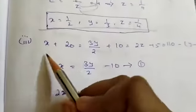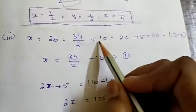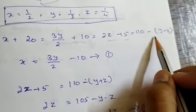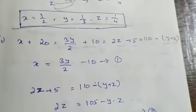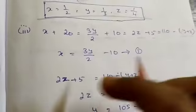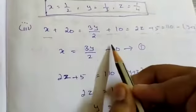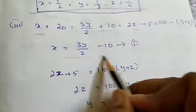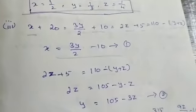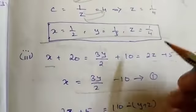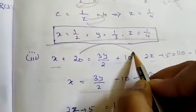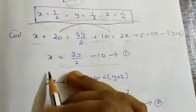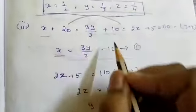Now let us go to the third sum: x plus 20 equal to 3y by 2 plus 10 equal to 2z plus 5 equal to 110 minus y plus z. So let us take x equal to 3y by 2 minus 10 as equation number 1, by bringing 20 to the other side, so 10 minus 20 gives minus 10.